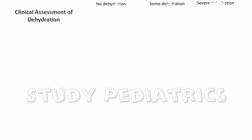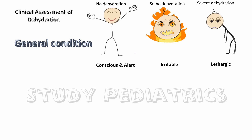The first parameter is the general condition of the baby. In no dehydration, the baby remains conscious and alert. In some dehydration, the baby is irritable. But in severe dehydration, the baby is lethargic and fatigued.